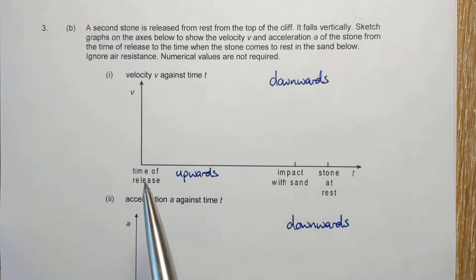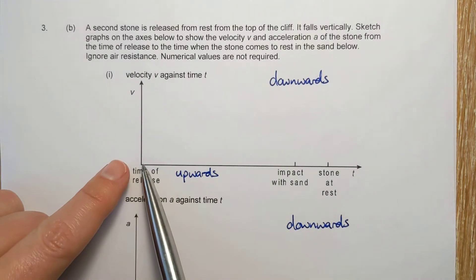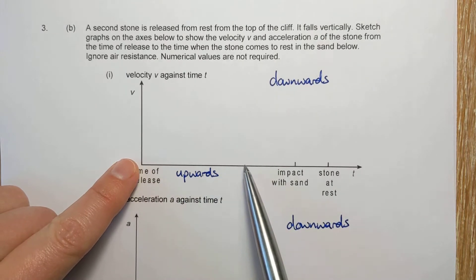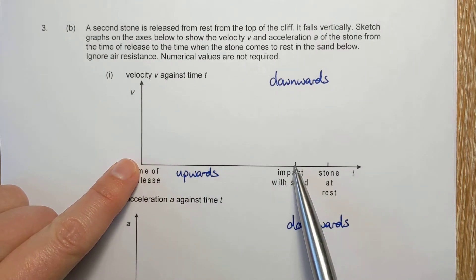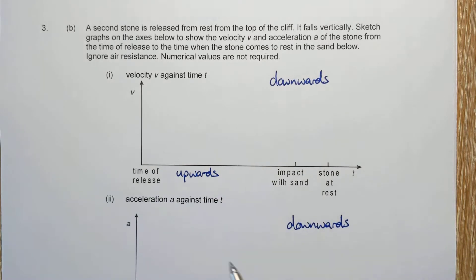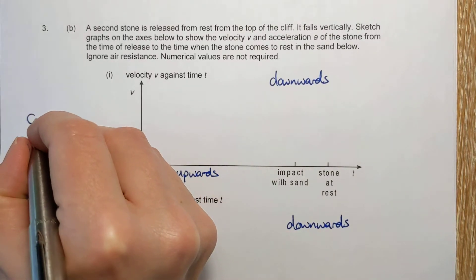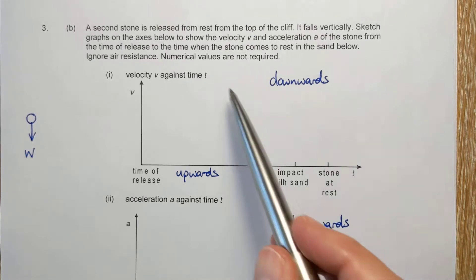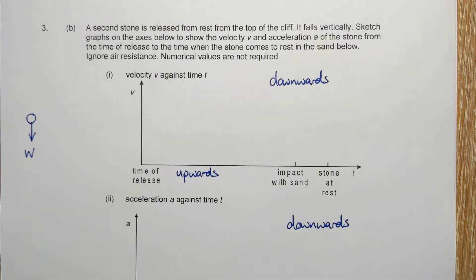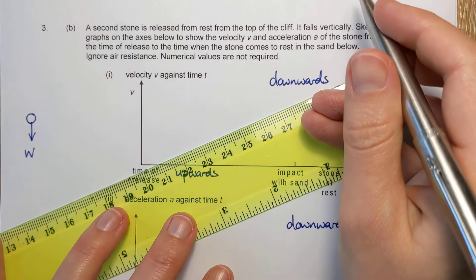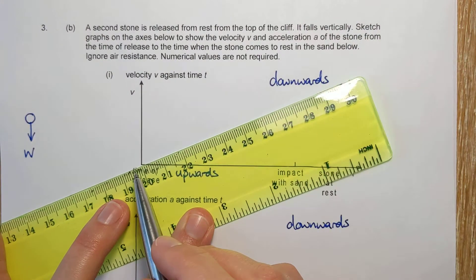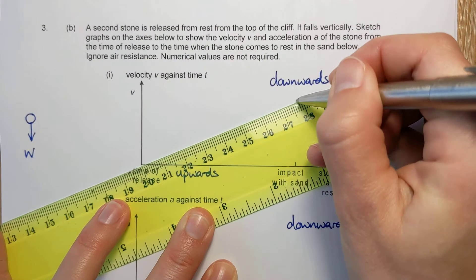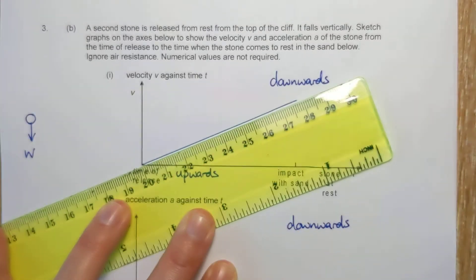And then also notice here, this is where we drop the stone and it falls and then it hits the sand there. So for that section of time in the vertical direction, we've only got the weight so the acceleration will be 9.81, which is constant. So the gradient of this graph needs to be constant and a constant gradient looks like this. So from the start until it hits the sand, constant gradient.